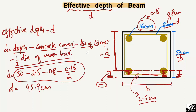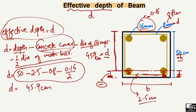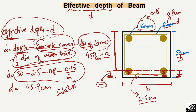It should be kept in mind that the effective depth is always less than the total depth of the beam, because we subtract the concrete cover, the diameter of the stirrups or ties, and half the diameter of the main bar. That is how to find the effective depth for a beam. Hope you guys understood — don't forget to subscribe for daily civil engineering videos. Thank you for watching.